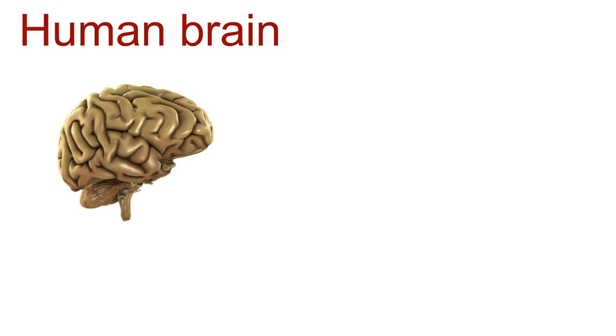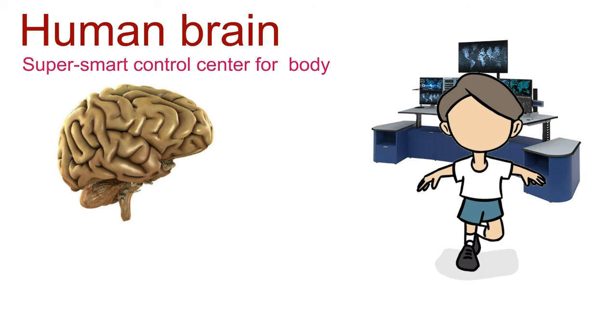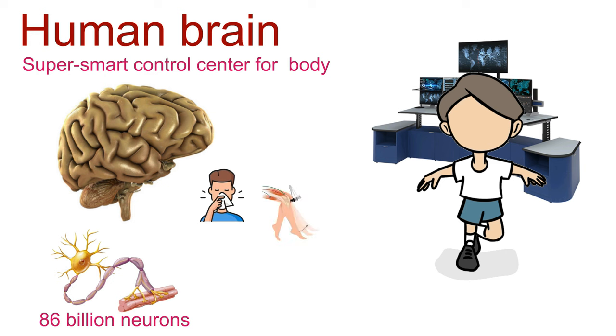Welcome to the incredible world of the human brain. Think of it as a super smart control center for your entire body. With a whopping 86 billion neurons, this amazing organ does everything from simple reflexes to super complex thinking.